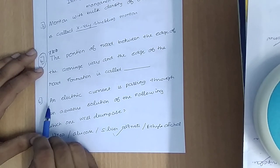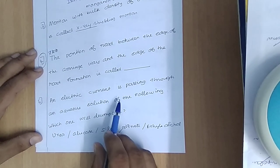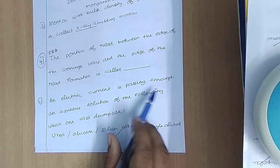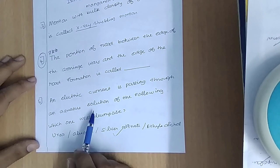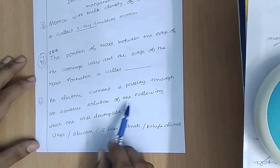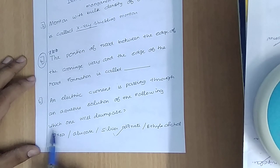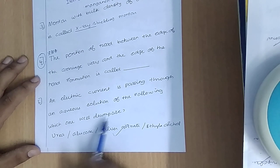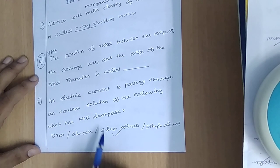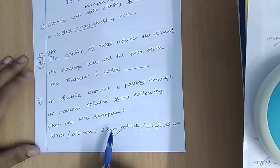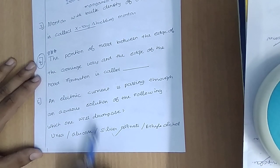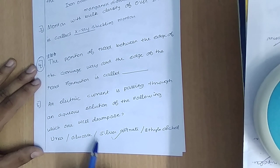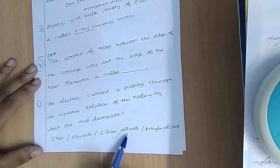Electric current is passing through an aqueous solution. Which one will decompose? That is the electrolyte. Which one will be — silver light?